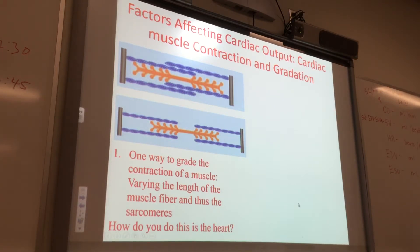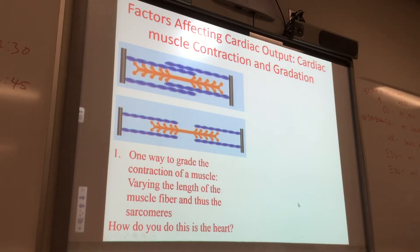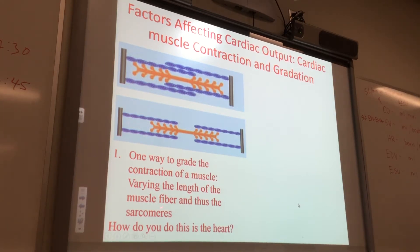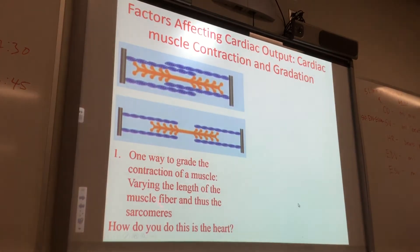Just like in skeletal muscle you can really forcefully or not very forcefully contract your bicep — that's called grading of the contraction. One way to grade contraction is to vary the length of the muscle fiber and thus the sarcomere. How do you vary the length of the muscle fibers in the heart?